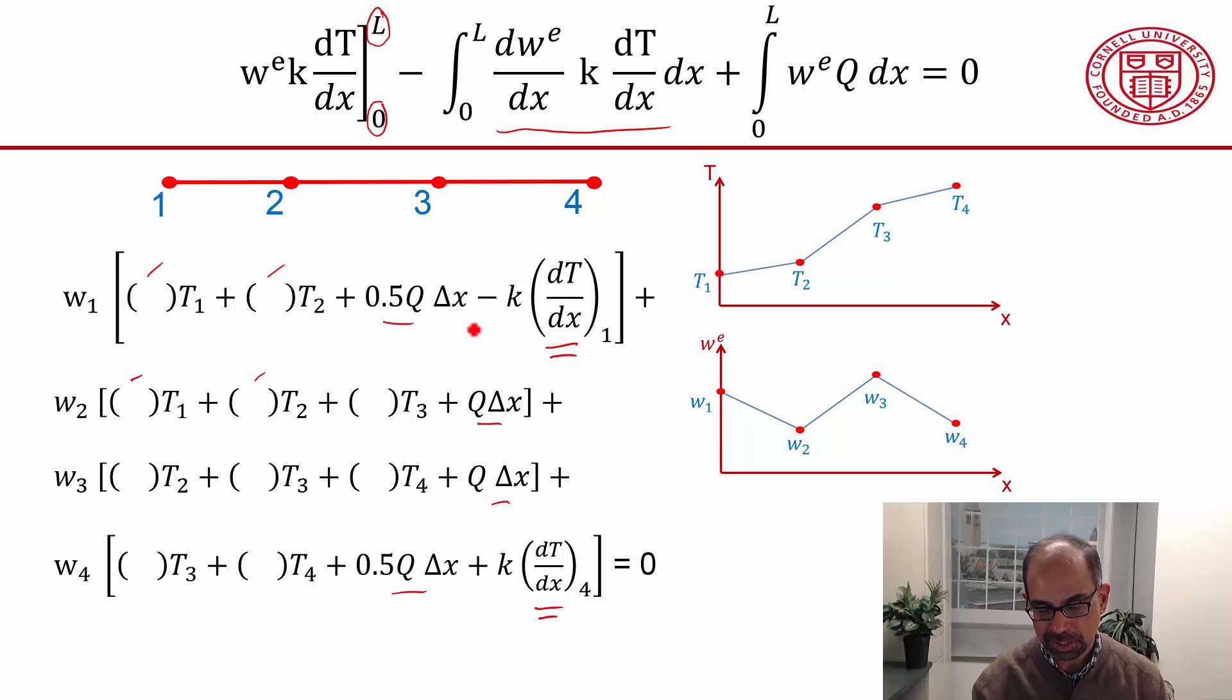And the only way we can do that is to set each of these to be zero individually. So we have to set this to be equal to zero. That'll give us the equation at node one. Similarly, that to be zero, and that'll give us the equation at node two and so on.